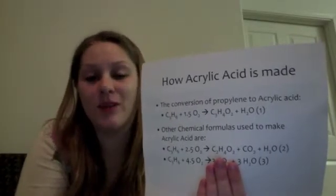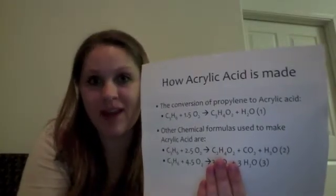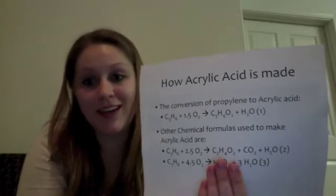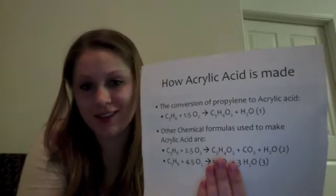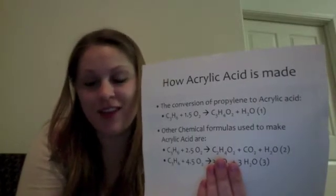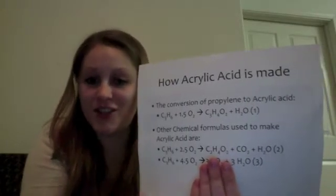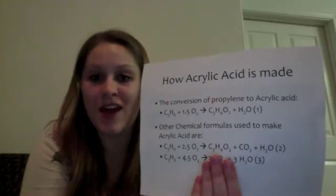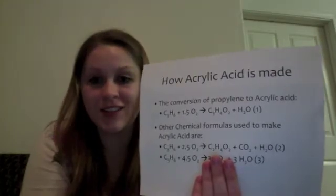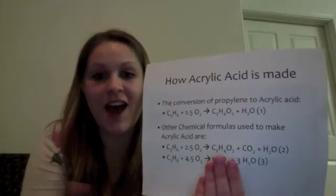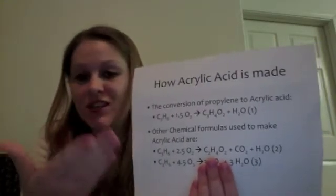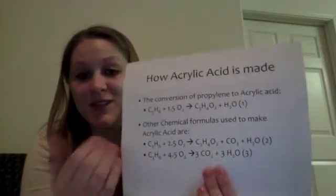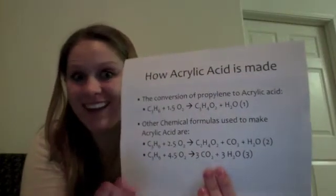Acrylic acid is commonly made by converting propylene into acrylic acid. This is done, as you can see, by taking C3H6 and a certain amount of moles — as you can see there are three different types, if my finger wasn't blocking it.